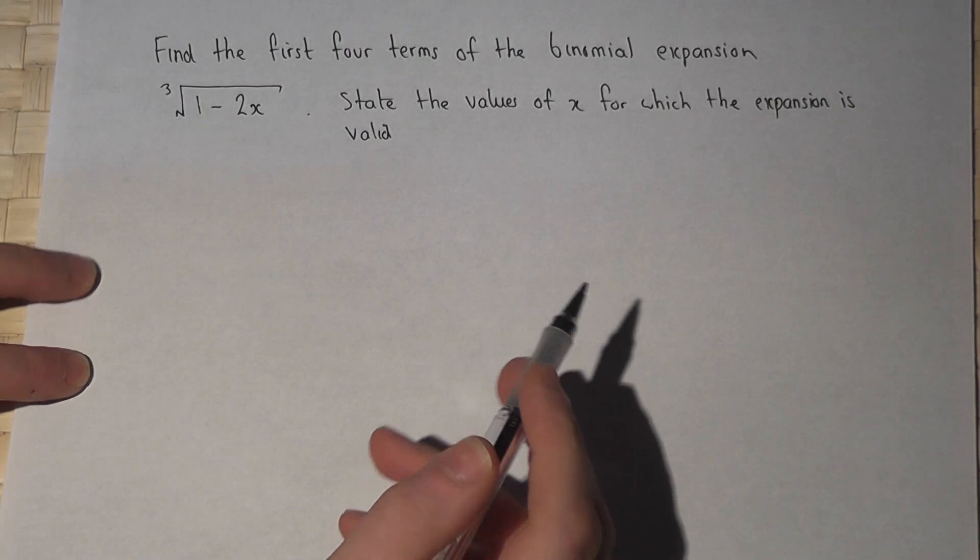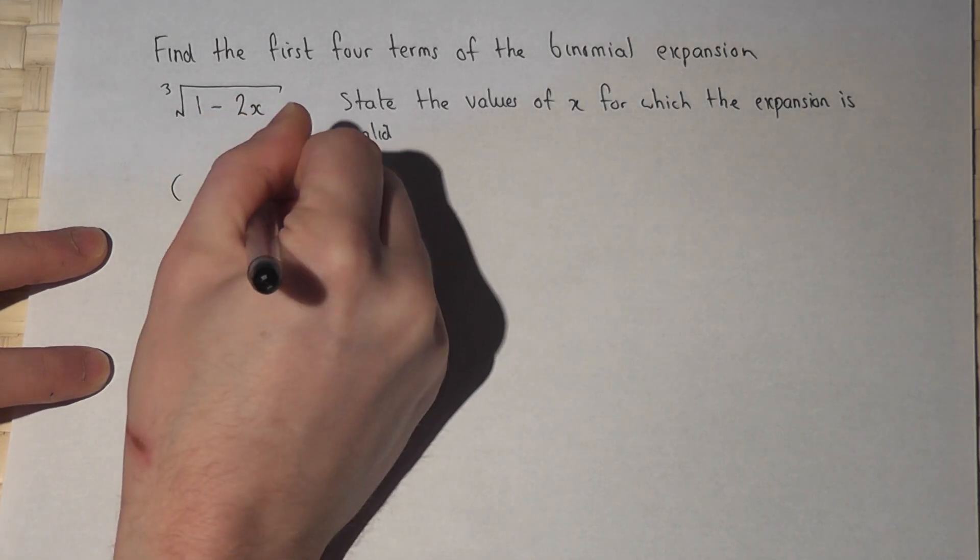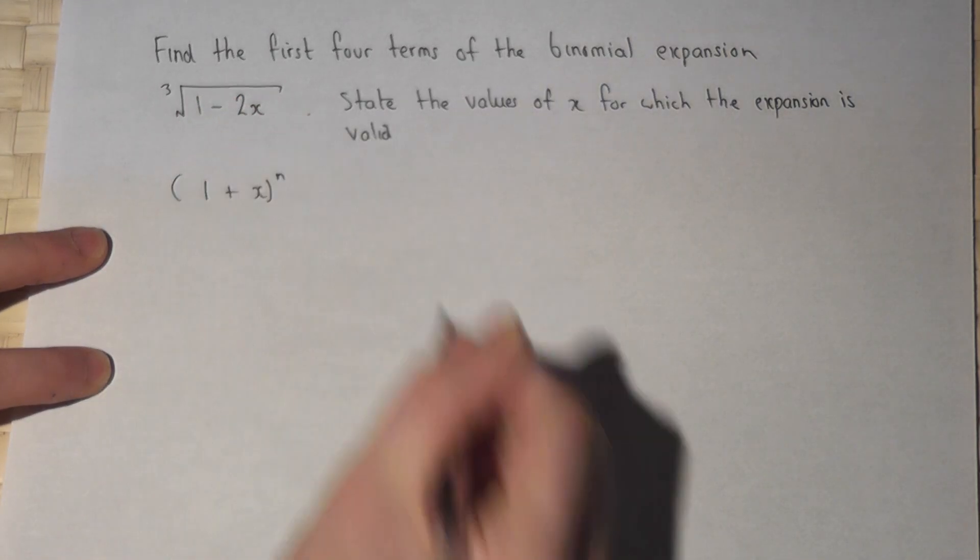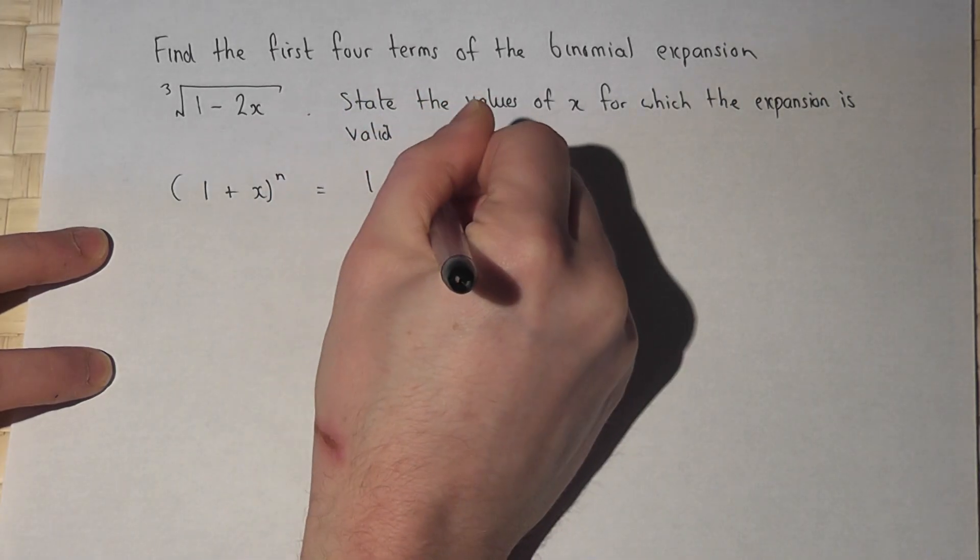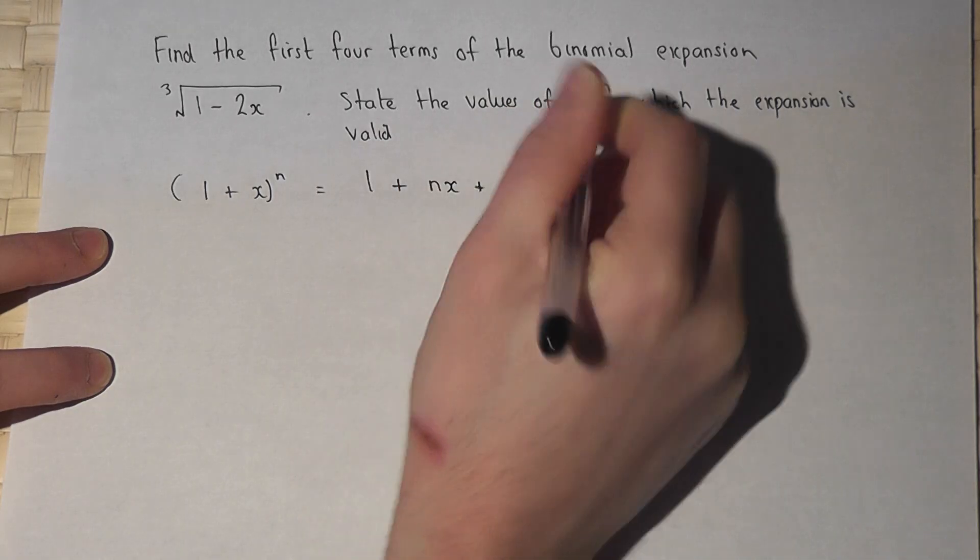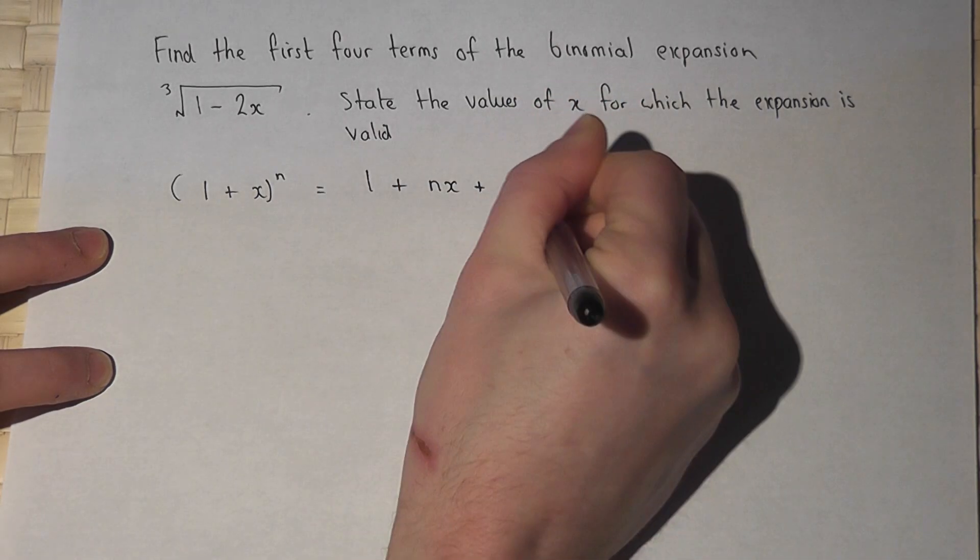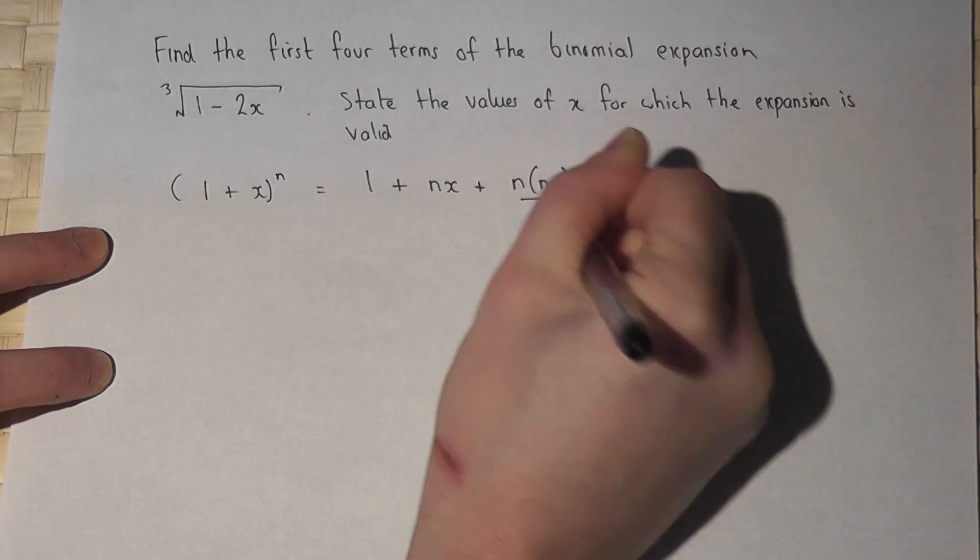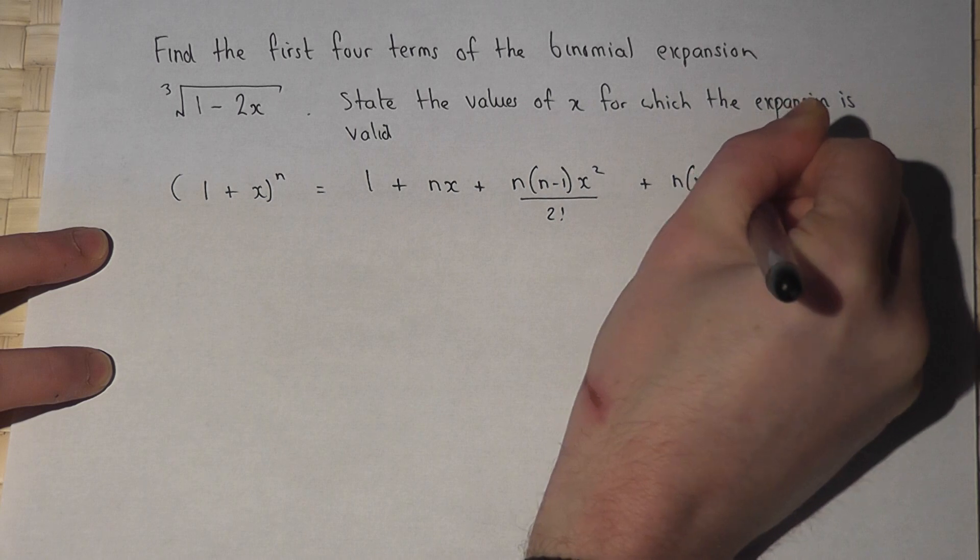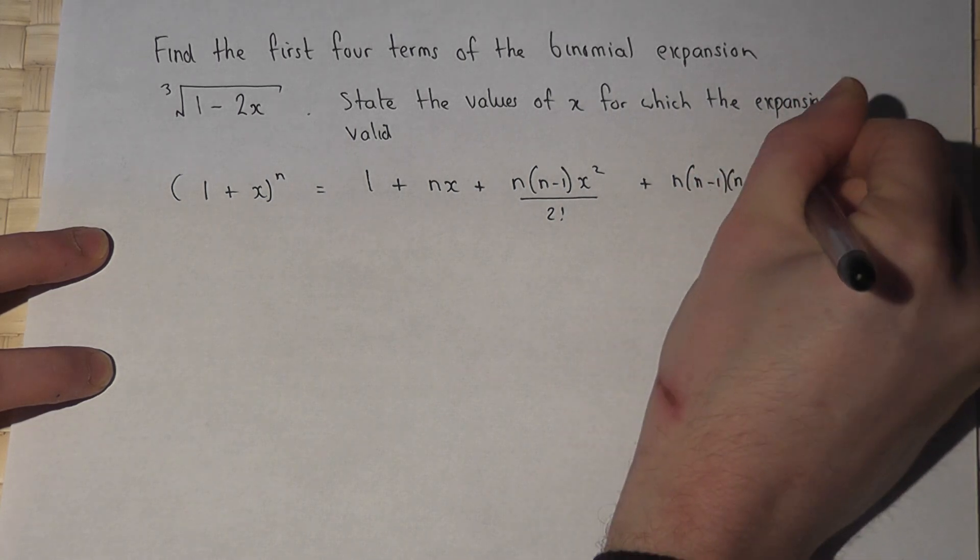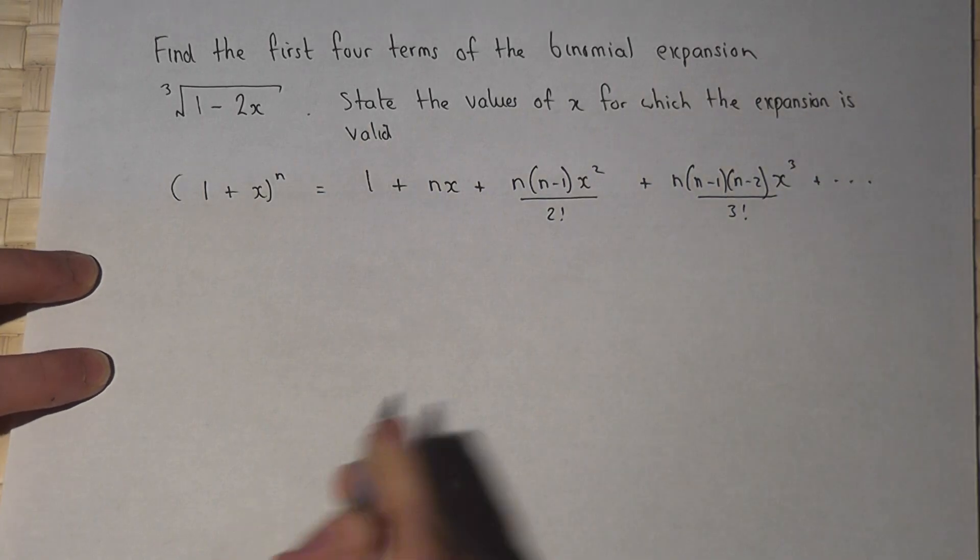Generally, if we have 1 plus x to the power of n, then the expansion is 1 plus nx plus n(n minus 1)x squared all over 2 factorial plus n(n minus 1)(n minus 2)x cubed over 3 factorial, and it keeps on going.